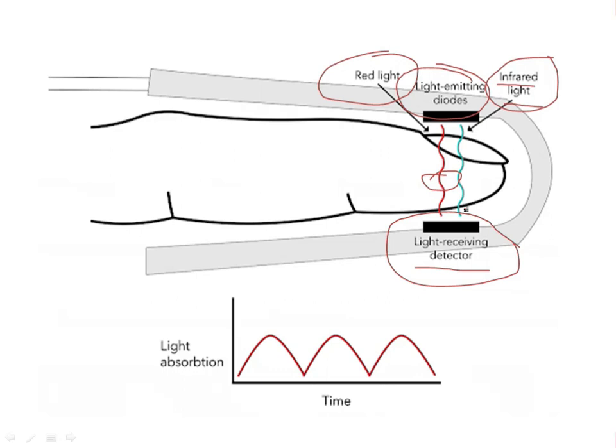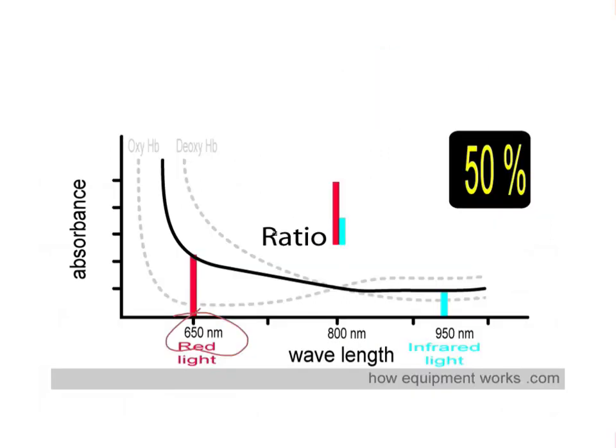So the red light will be absorbed by the deoxygenated hemoglobin, the infrared light absorbed by the oxygenated hemoglobin. At 660 nanometers, the absorption becomes greater for deoxygenated hemoglobin. At 940 nanometers, the absorption will become greater for oxygenated hemoglobin.